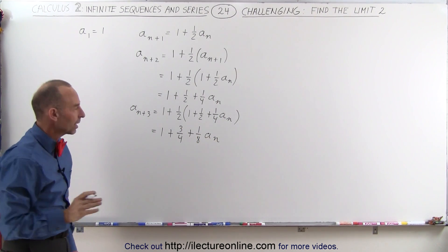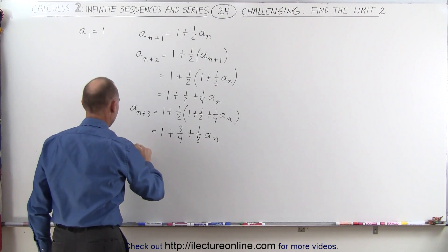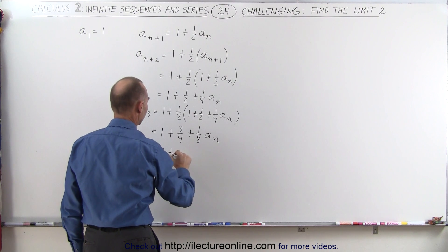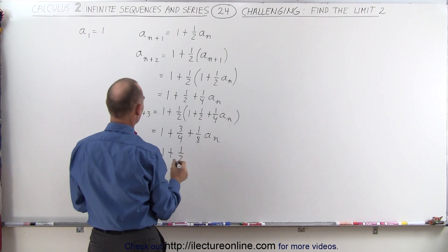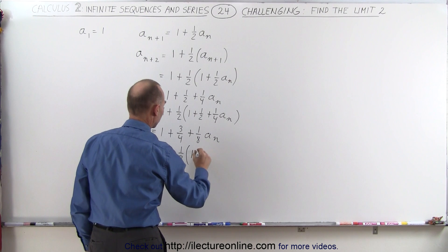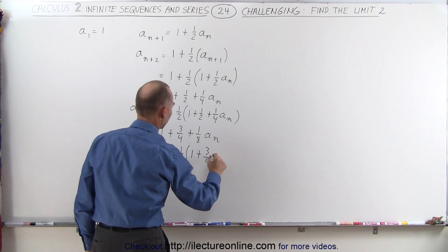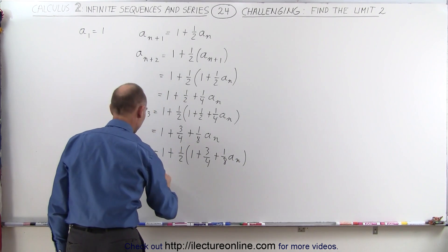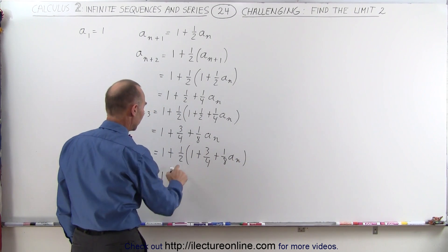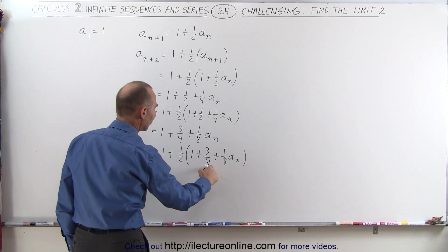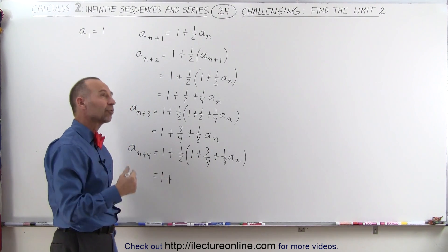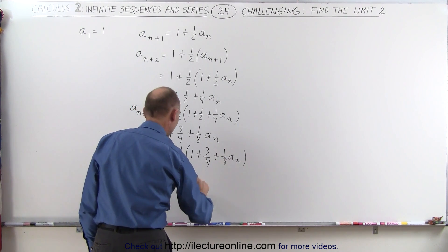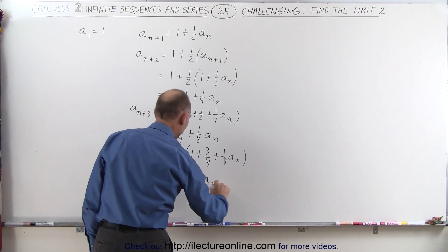Let's do it one more time so we can see a pattern. a(n+4) is equal to 1 plus one-half times a(n+3), which equals 1 plus one-half times the quantity 1 plus three-quarters plus one-eighth times a_n. This becomes equal to 1 plus seven-eighths plus one-sixteenth times a_n.